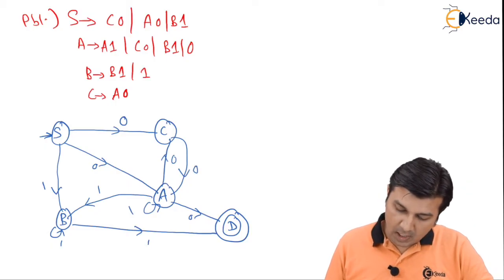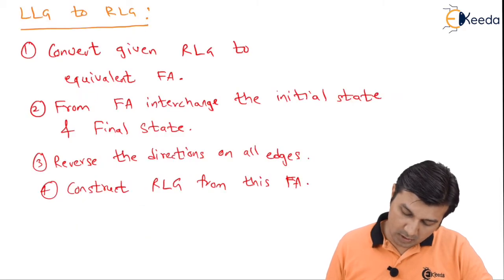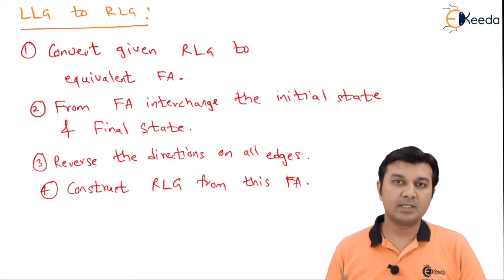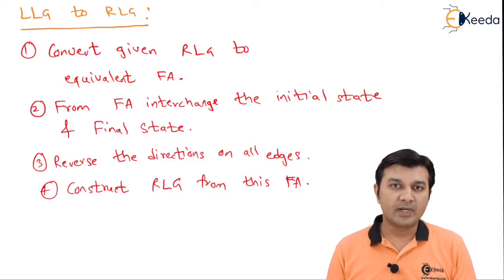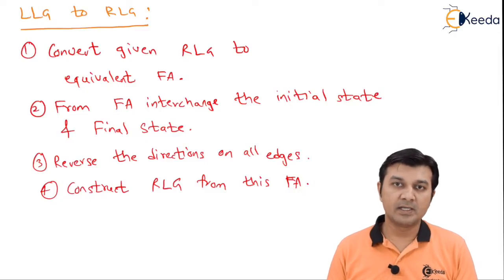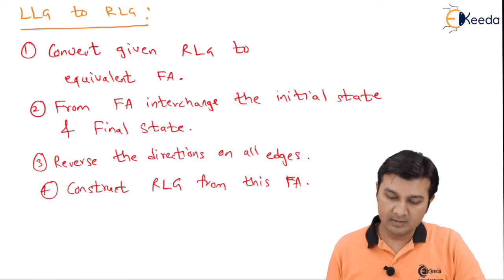The next step is: from the FA, interchange the initial state and final state, and after interchanging, reverse the directions. Let us do that.